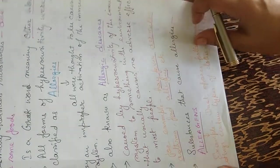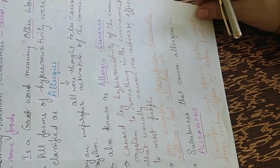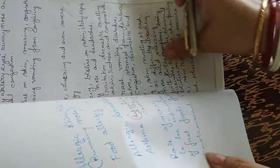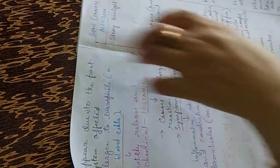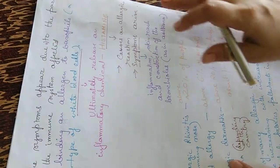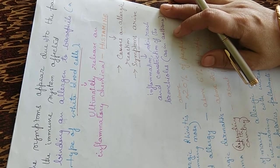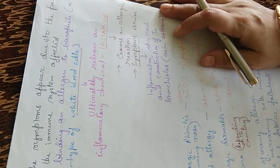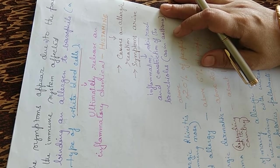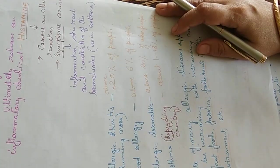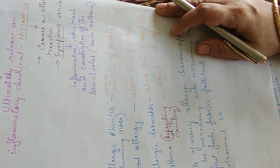Substances that cause allergies are called allergens. Examples include dust, spores, pollen, insect stains, certain types of clothes, food, etc. Symptoms appear when allergens bind to basophils, a type of white blood cell, releasing an inflammatory chemical known as histamine, which causes allergic reactions. Symptoms are generally inflammation, skin rash and constriction of the bronchioles as in asthma.